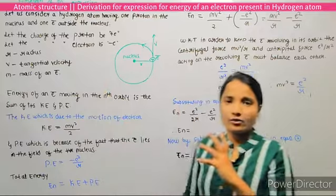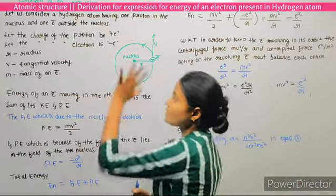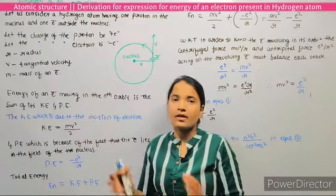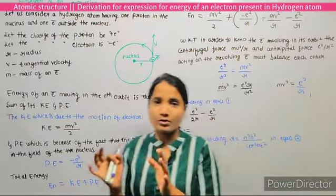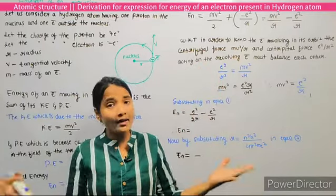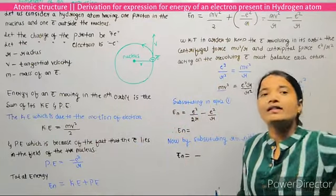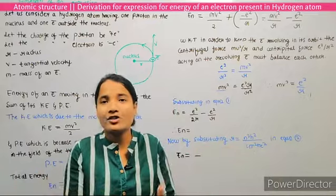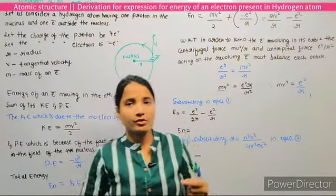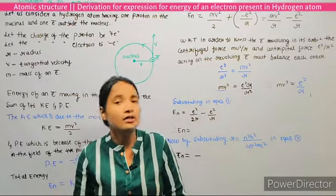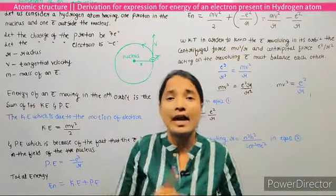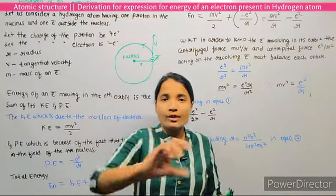Let the charge of the proton be plus e and the charge of the electron be minus e. Here r is the radius, v is the tangential velocity, and m is the mass of the electron. To derive the energy terms, we must know two types of energies: kinetic energy and potential energy, because the energy of an electron moving in the nth orbit is the sum of its kinetic energy and potential energy.